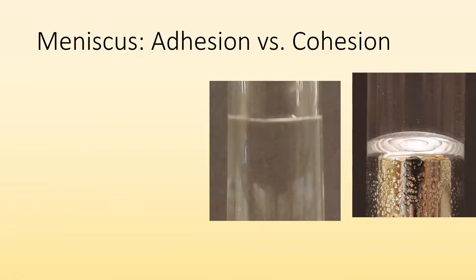The meniscus. If you ever looked at a test tube filled with substance, you can see that it's not actually perfectly flat. Here I got water that has kind of a downward going meniscus. And here I have some gallium, which has an upward going meniscus. Why is that?